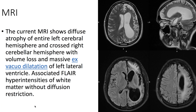On MRI, we see diffuse atrophy of the entire left cerebral hemisphere, associated with massive ex-vacuo dilatation of the left lateral ventricle. We also see associated FLAIR hyperintensities here in the left cerebral hemisphere.